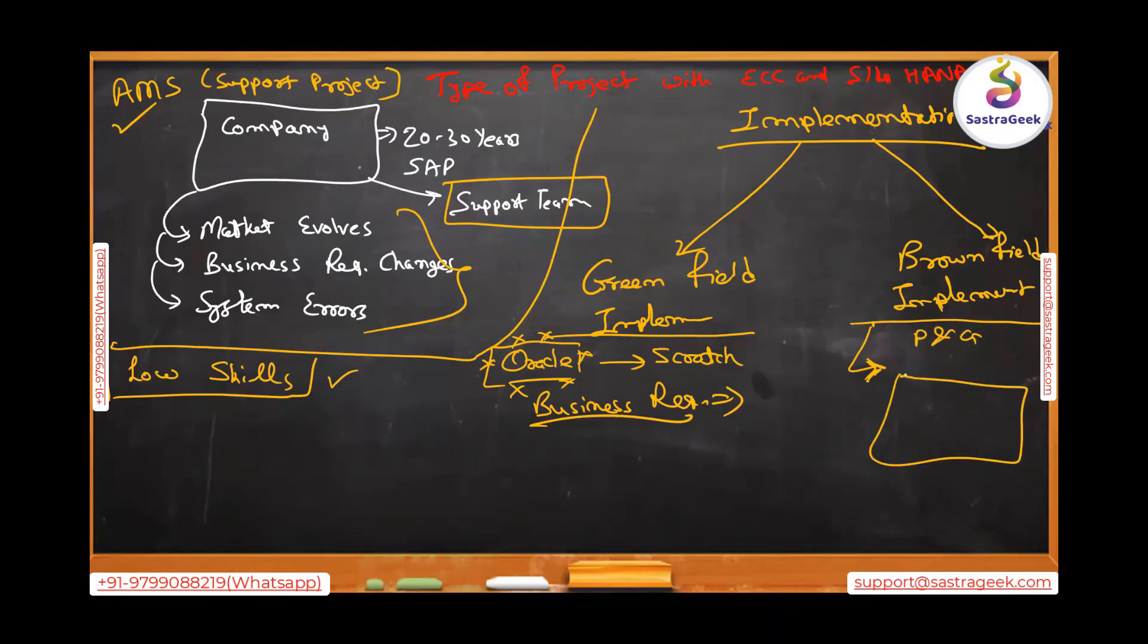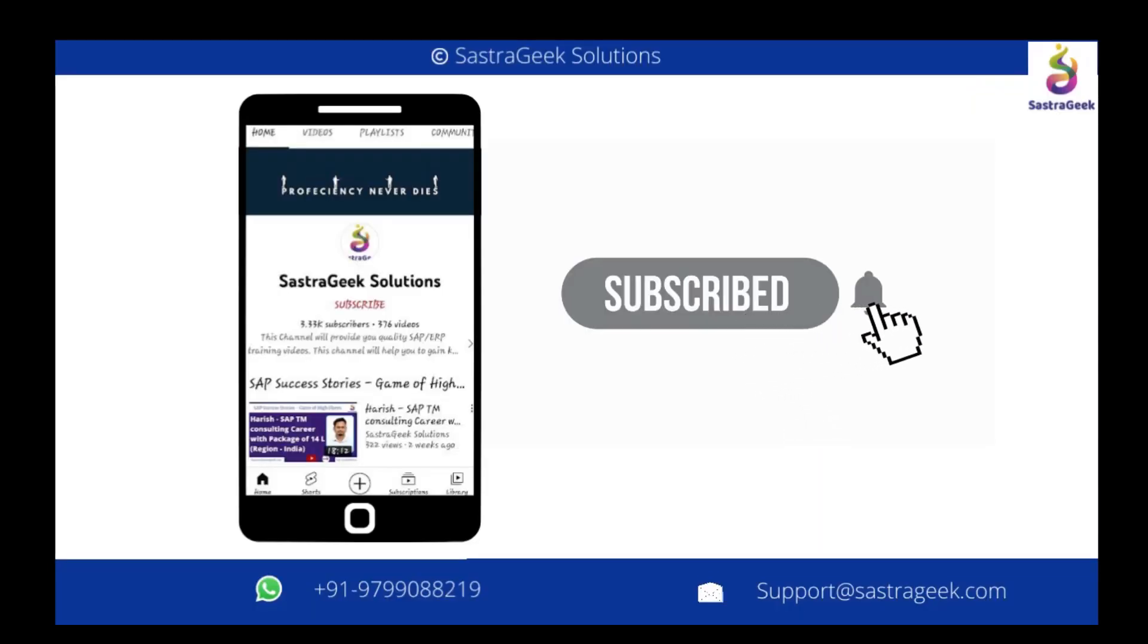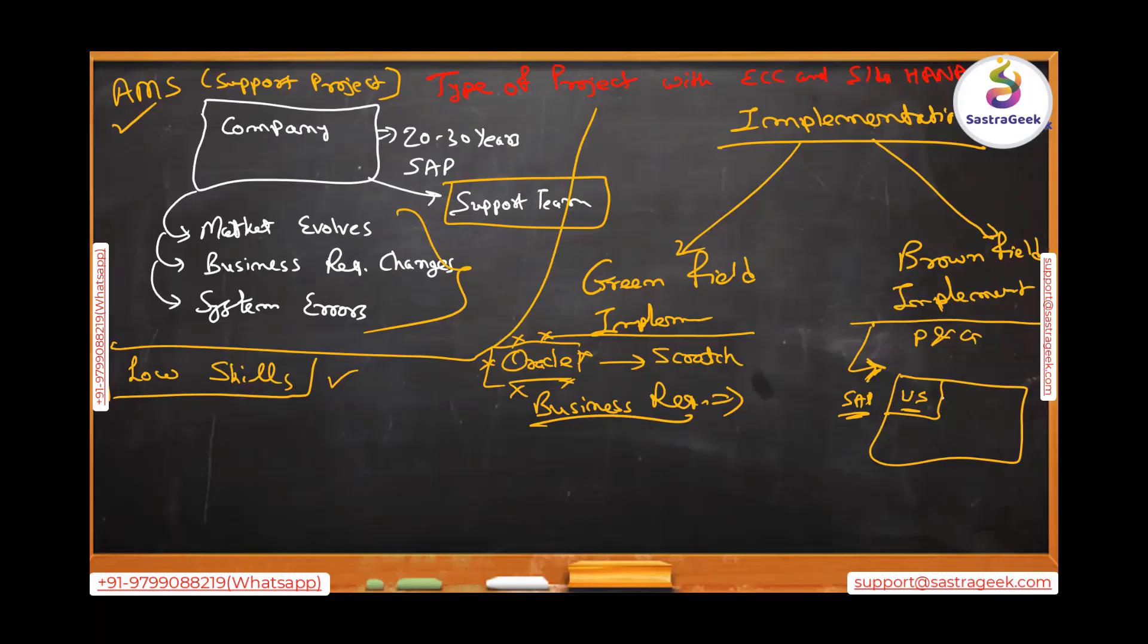Procter and Gamble has one SAP system, and now on this SAP system already they have US as a country which is available. They are running the business for Procter and Gamble, they are selling things, manufacturing happens, everything is there. Then they decided that now they want to roll out this particular system in another European country, let's pick up an example, Spain. Already you have SAP system available, you have already available established processes.